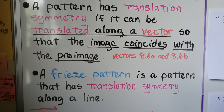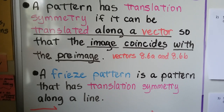A pattern has translation symmetry if it can be translated along a vector so that the image coincides with the pre-image. We talked about vectors in 8.6a and 8.6b. If you missed that and you don't understand vectors, you need to go back and watch those so you don't get more confused.